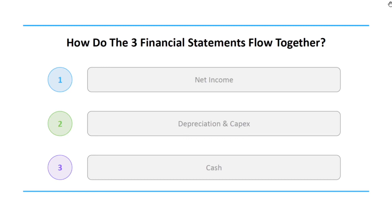Hey everyone. The purpose of today's video is to show how the three financial statements flow together. This is a common topic that's tested in finance and accounting interviews. If you need a refresher on the three financial statements, I'll leave links in the description below to videos explaining the income statement, balance sheet, and cash flow statement. Now there are many ways in which the three financial statements flow together, but today we're going to hit on the top three: net income, depreciation and capex, and cash.